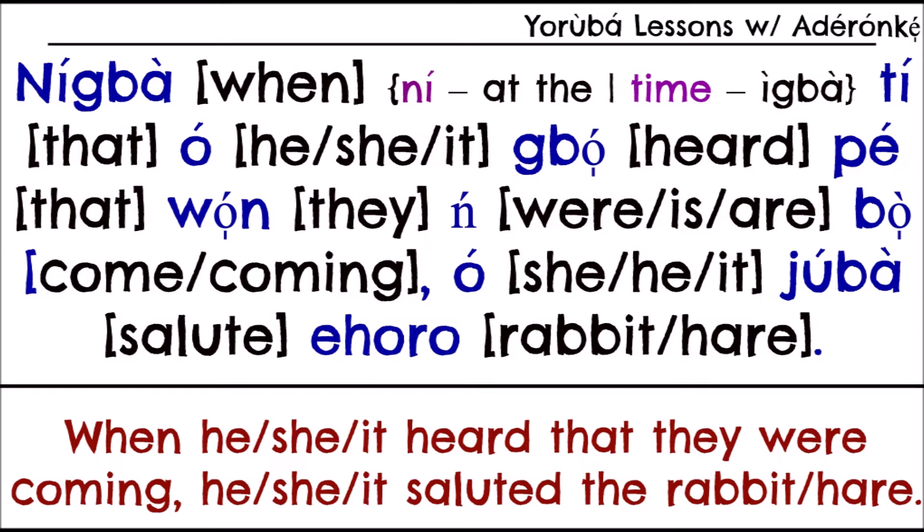So putting it together: 'when he, she, or it heard that they were coming' — and then 'o juba eoro': he, she, or it paid homage to the rabbit or hare. 'Juba' is to salute, to pay homage. 'Eoro' is rabbit or hare.